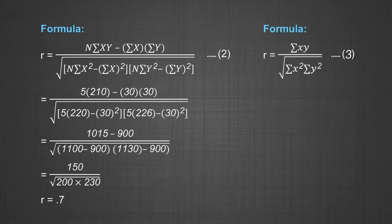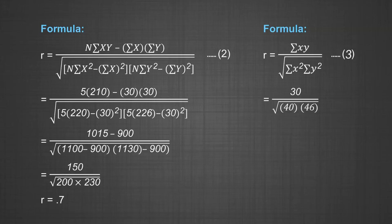Now for the second method, the deviation score method. The formula is: R equals ΣXY divided by the square root of ΣX² times ΣY². Inserting the values gives 30 divided by the square root of 40 times 46, which leads to 30 divided by approximately 42.9. The final value is 0.7, which tallies with the value obtained using the first method.